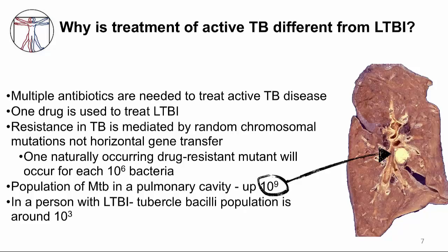If we give a single antibiotic to this person, the resistant bacteria will be selected and grow. In contrast, a person with LTBI will only harbor about a thousand live bacteria, so it's unlikely that any antibiotic-resistant mutants exist in that population. This is why TB disease is treated with more than one antibiotic, whereas LTBI can be treated with one antibiotic.